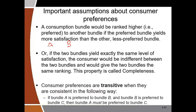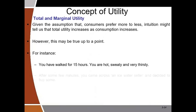The second property is transitivity: consumer preferences must be transitive, meaning consistent. If you prefer A to B and you prefer B to C, you must then prefer A to C. If you walk into a supermarket and prefer product A to B and B to C, you must prefer A to C — otherwise you go in circles without making a choice, and your preferences are not transitive.